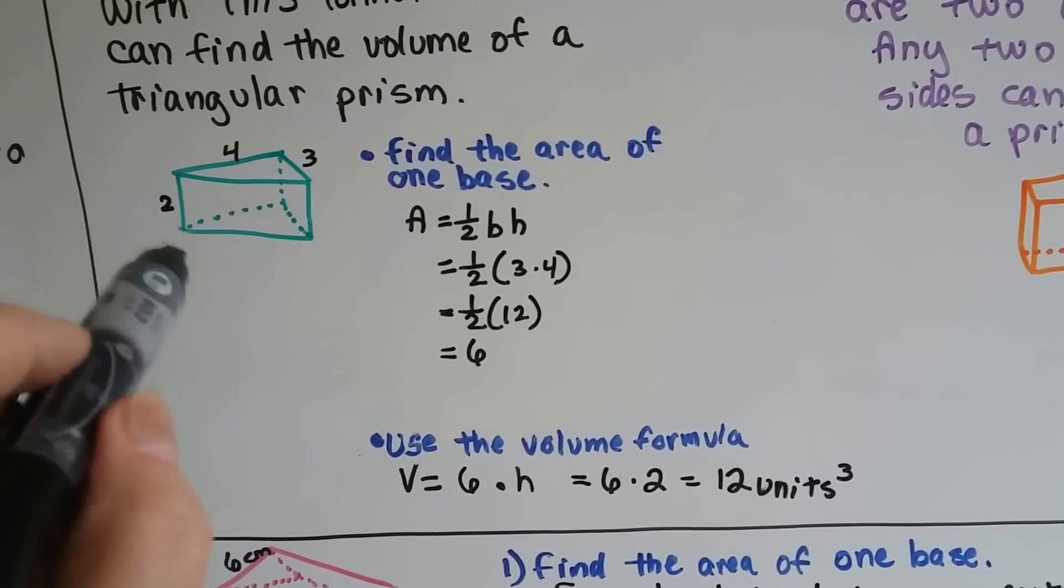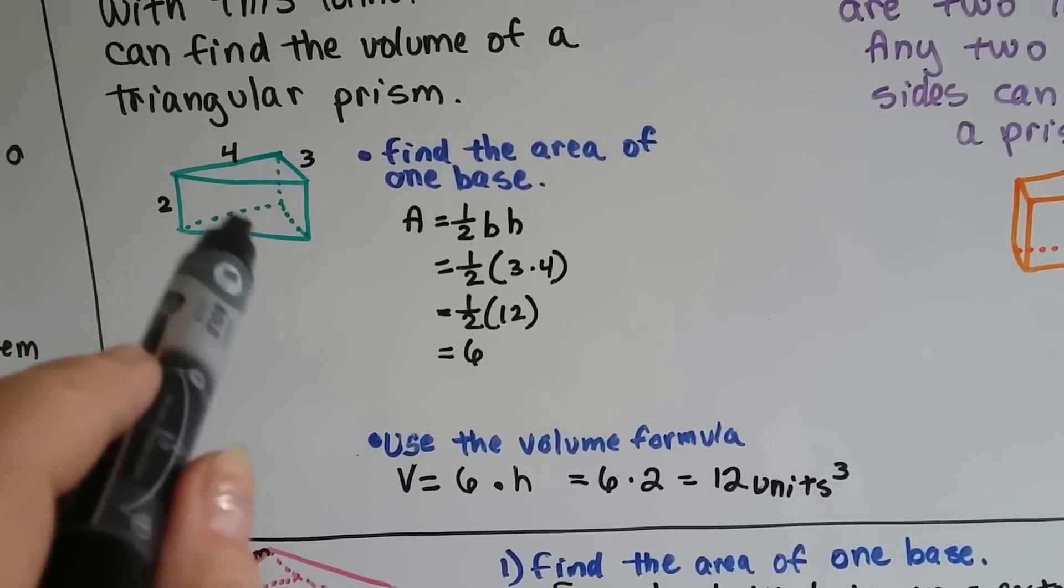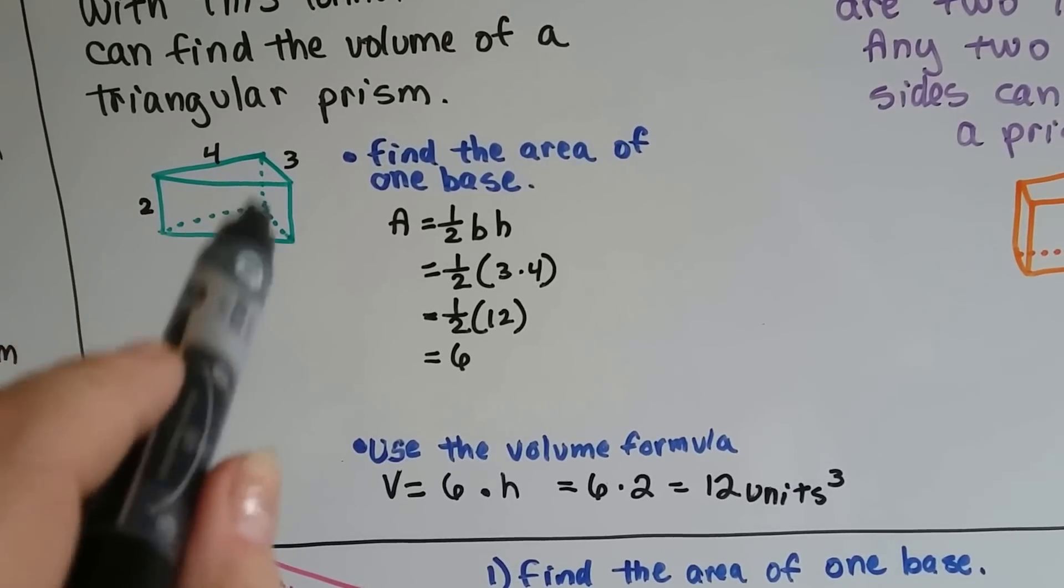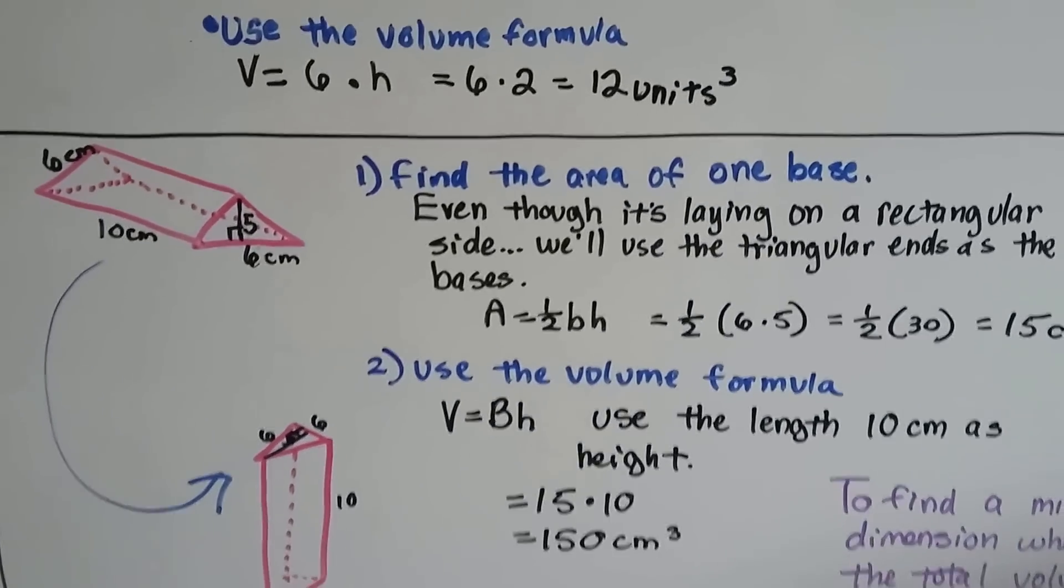Now we just multiply it by the height. 6 times 2 is 12 units cubed. So we know that this is filled with 12 units cubed if they're all one-inch cubes or one-centimeter cubes.